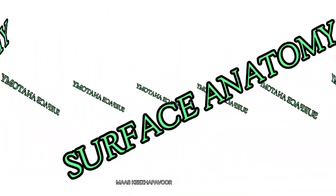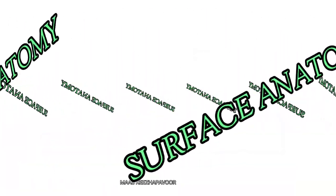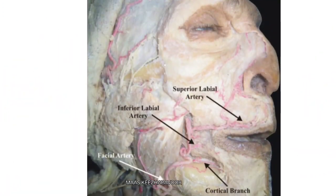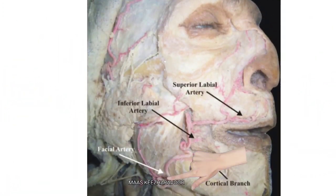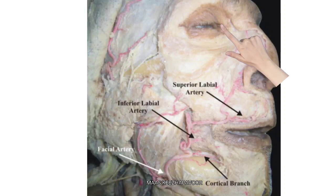The surface anatomy of the facial artery is marked by connecting three points: first, a point on the base of the mandible at the anterior border of the masseter muscle; second, a point 1.5 cm lateral to the angle of the mouth; and third, a point at the medial angle of the eye.